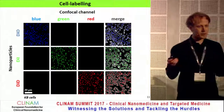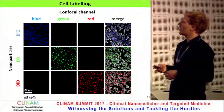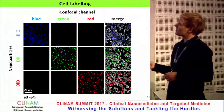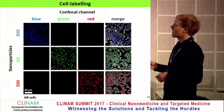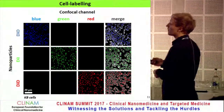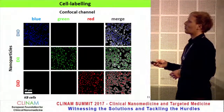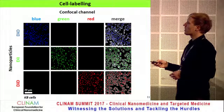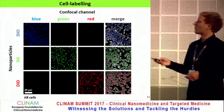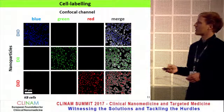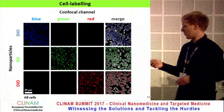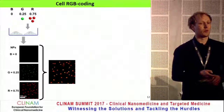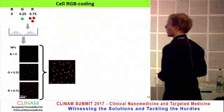We analyze this using confocal microscopy on three channels. Importantly, if we label cells with only the blue nanoparticles, we get a nice signal in the blue channel but none in the green and red channels, and basically the same is true for the other particles. This orthogonality allows us to go to the color coding.